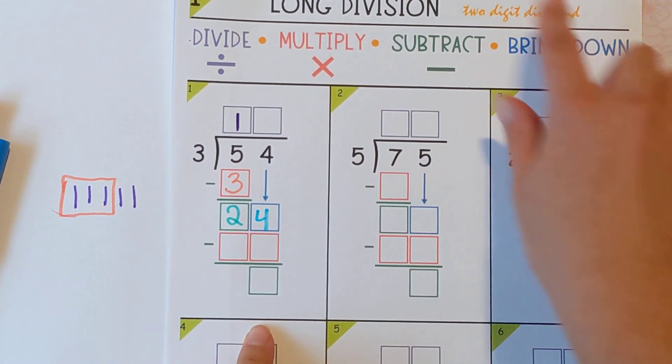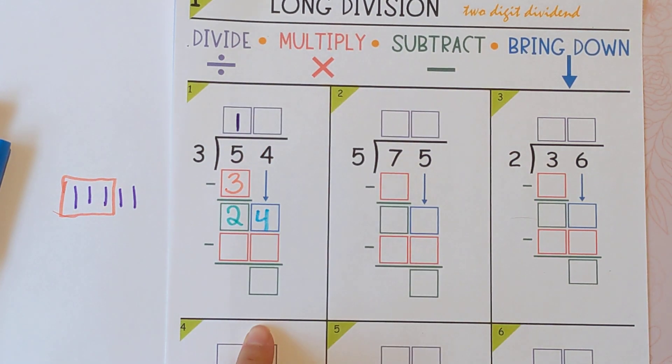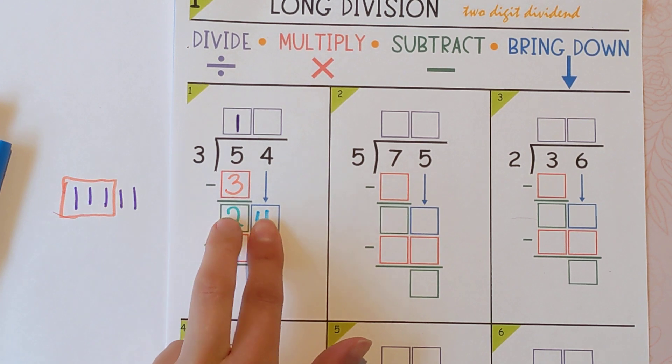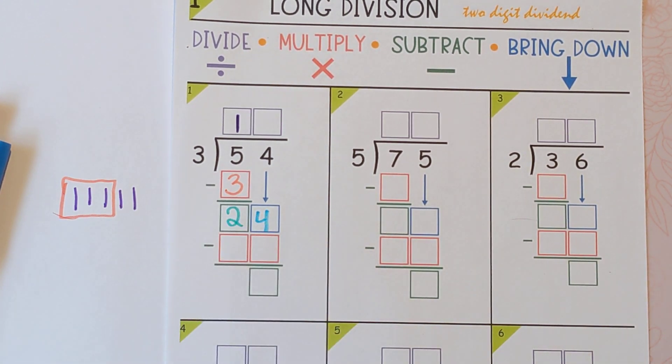Since we got to the end here, the next step is to divide again. And this time we're using the last thing we touched, which is the four, but also the two. So we're doing 24 divided by three.